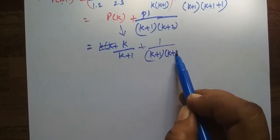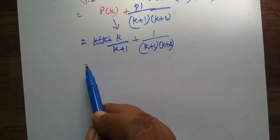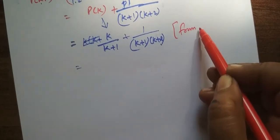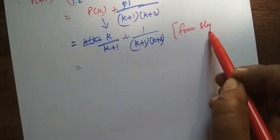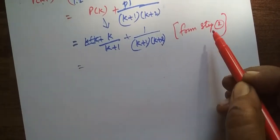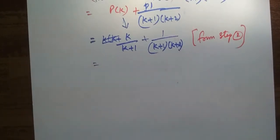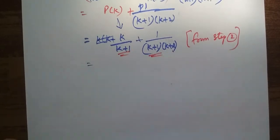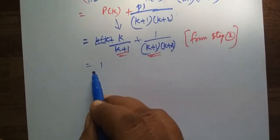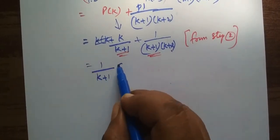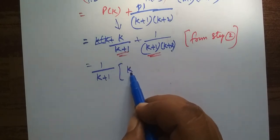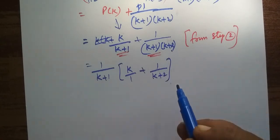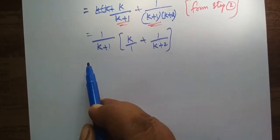Plus 1 by (k+1), then K plus 2. This is common. We can do this from step 2. K plus 1 is common. So, 1 by (k+1), in the numerator there is K, then 1 by (k+2). Now take the LCM for this. So, 1 by (k+1), cross multiply K bracket, K plus 1.